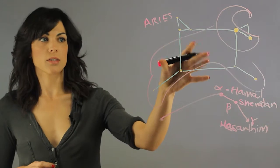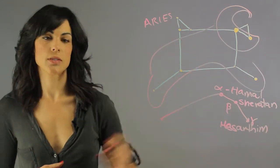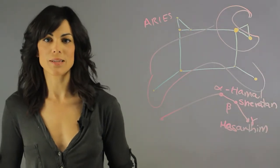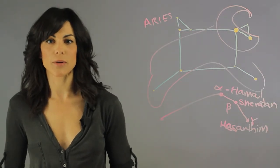So this is the constellation of Aries, the Ram constellation, and this is what you will actually see in the sky with these three main components. My name is Aileen Perez, I'm an astrophysicist, and this is the Ram constellation.